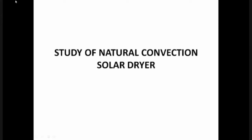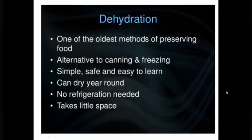We are now going to discuss the study of natural convection solar dryers. Dehydration is one of the oldest methods for preserving food. In olden days, by dehydration we can preserve food and maintain effective vitamins without deterioration. It is an alternative to canning and freezing — simple, safe, and easy to learn. Food can be dried year-round with no refrigeration needed and it takes little space.